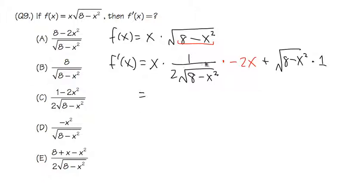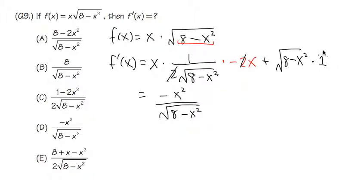I notice the 2 in the numerator cancels with the 2 from the square root derivative. Then x times x gives x squared, but it's negative, so on the top I have negative x squared over the square root of 8 minus x squared. For the second part, we are adding the square root of 8 minus x squared, since it's multiplied by 1.